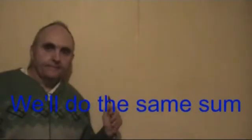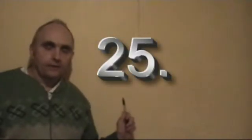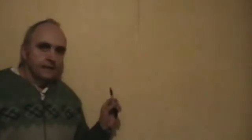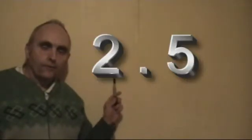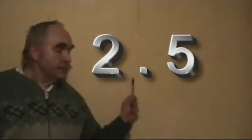I'll give you an example: 25 divided by 10. First you take the 25 with nothing at the other side of the decimal point. Then to divide it by 10, you move one place after the decimal point.